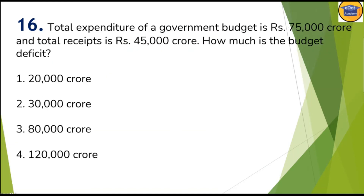Question sixteen is a direct question. Total expenditure of the government budget is rupees 75,000 crore and total receipts are given. Since expenditure is more and receipts are less, budget deficit equals expenditure minus receipts: 75,000 crore minus 45,000 crore equals 30,000 crore. The answer is correct.